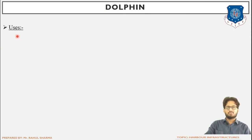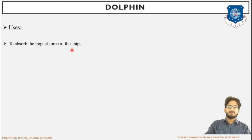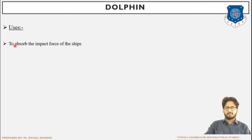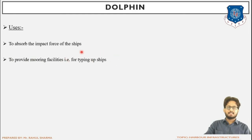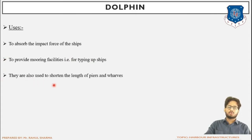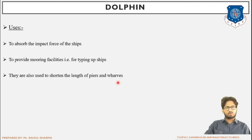Continuing with the uses of dolphins: first, to absorb the impact force of the ship — when the ship comes into contact with the dolphin, the dolphin absorbs the impact force to sustain its own stability and avoid damage to the ship. Second, to provide mooring facility — the basic purpose of tying up the ship. Third, dolphins are used to shorten the length of pier or wharves — when provided adjacent to piers or wharves, the length of the marine terminal structure can be shortened as the tying up of the ship can be done with the dolphin itself.